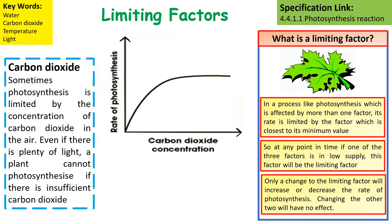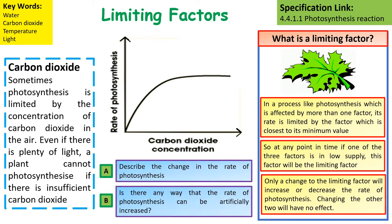Carbon dioxide can sometimes limit the rate of photosynthesis. Generally, we consider that there is plenty of carbon dioxide in the air, but if we artificially increase the amount of carbon dioxide by pumping it into a greenhouse or having something burning that releases carbon dioxide, that would also increase the rate of photosynthesis.